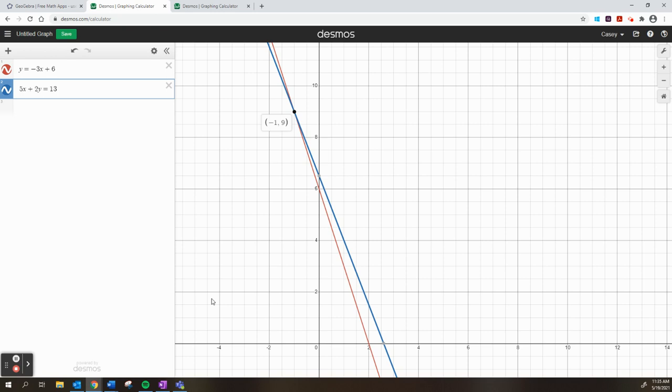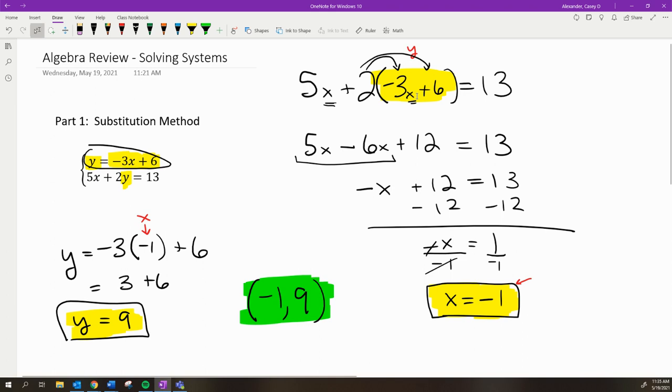comma 9. That's the substitution method - we replaced an equivalent value in one equation. I changed the y to -3x + 6.